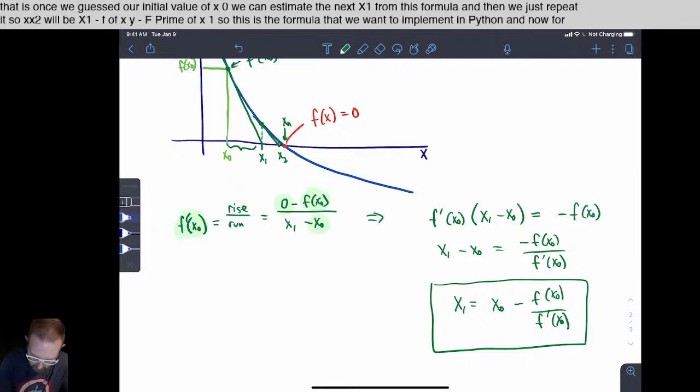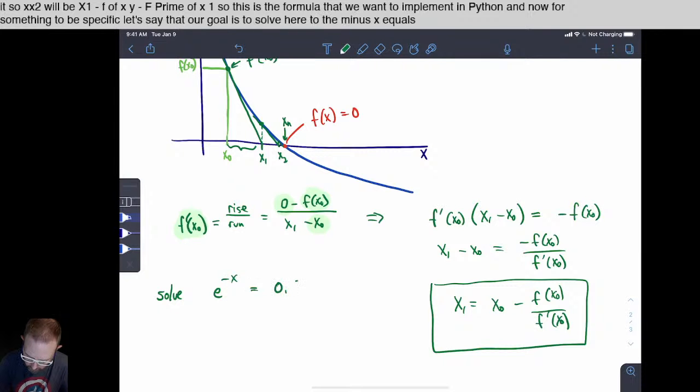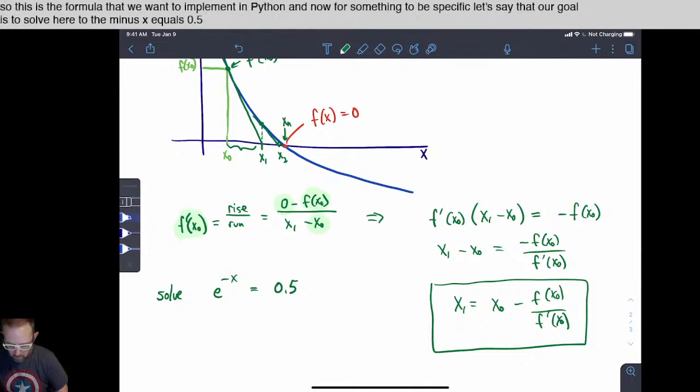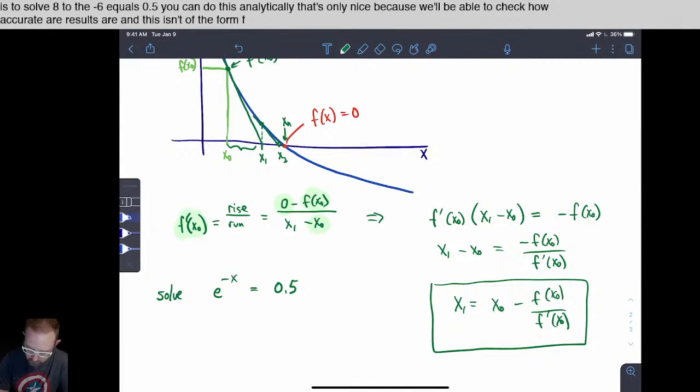And now for something to be specific, let's say that our goal is to solve e to the minus x equals 0.5. You can do this analytically. That's only nice because we'll be able to check how accurate our results are. And this isn't of the form f of x equals 0.